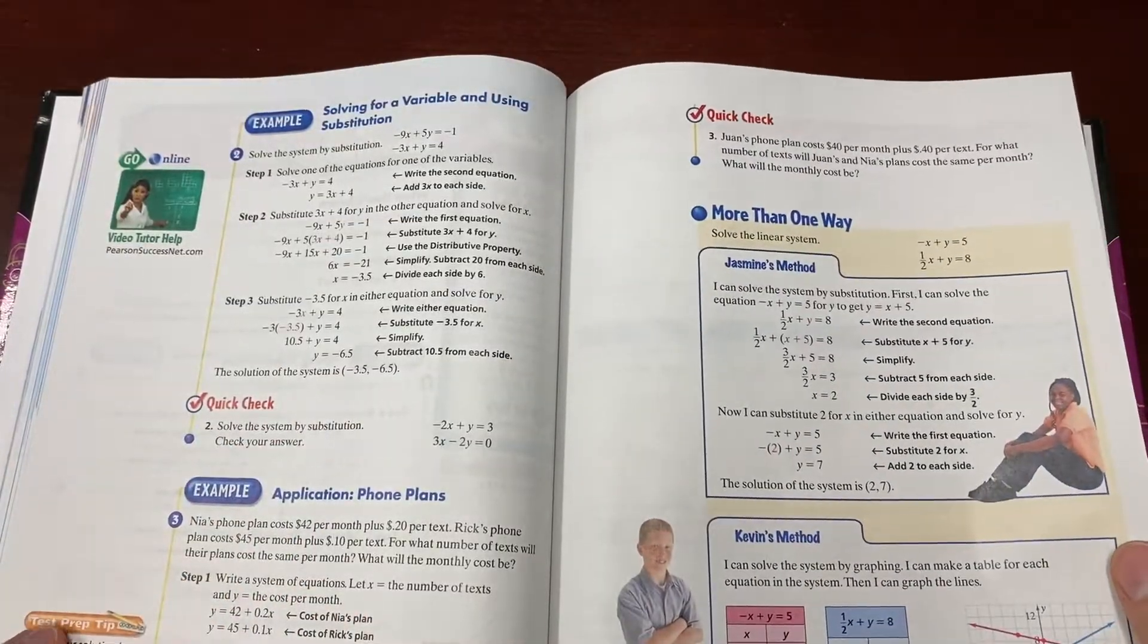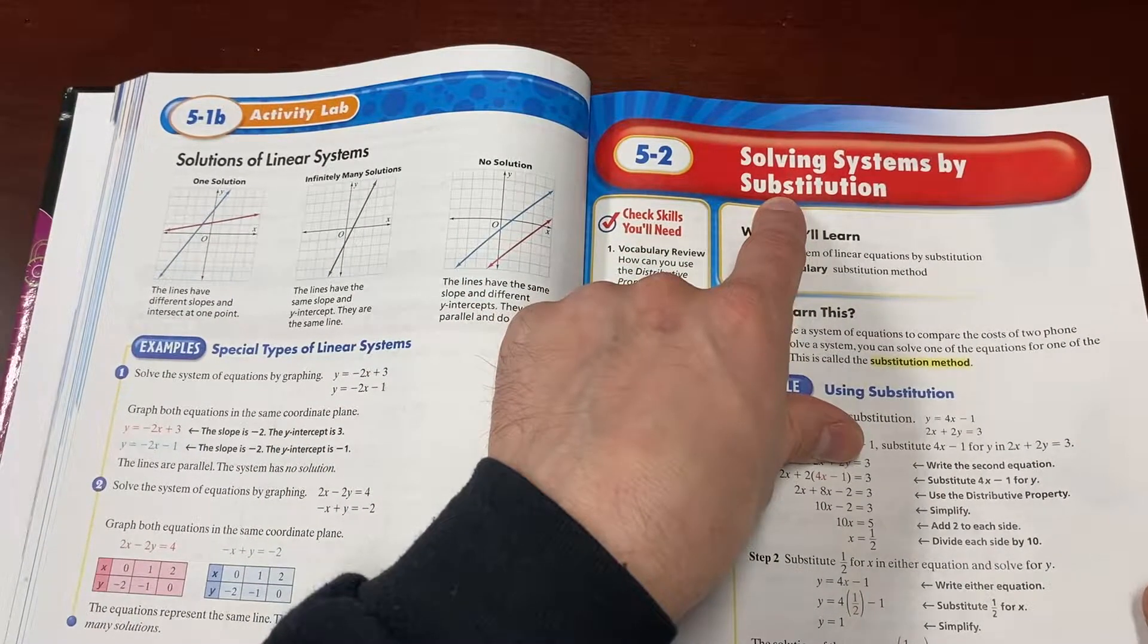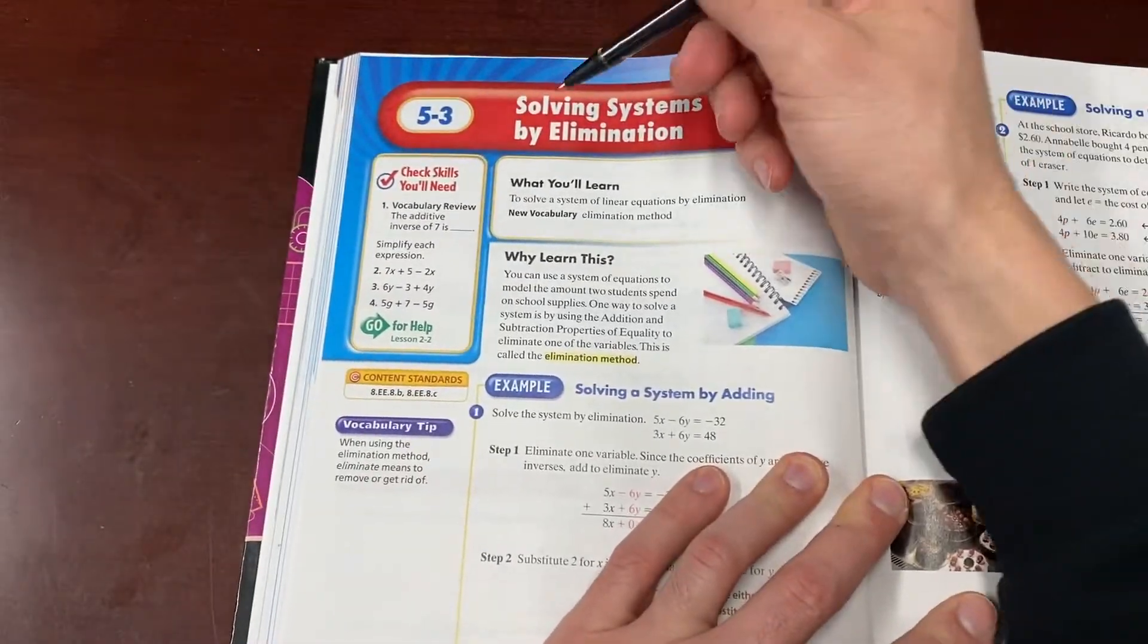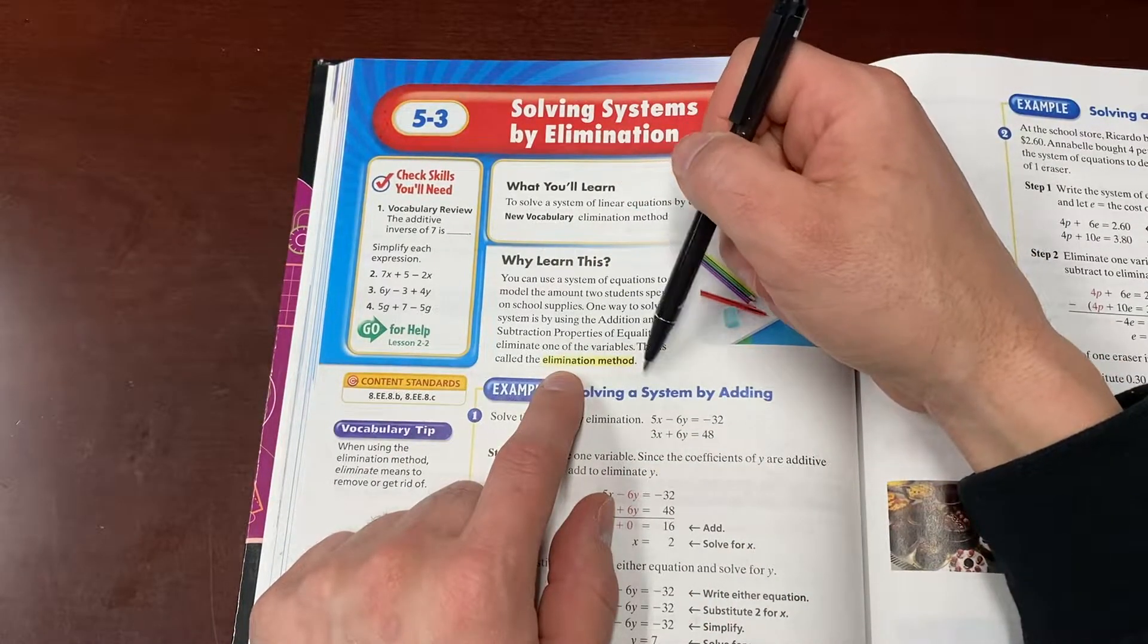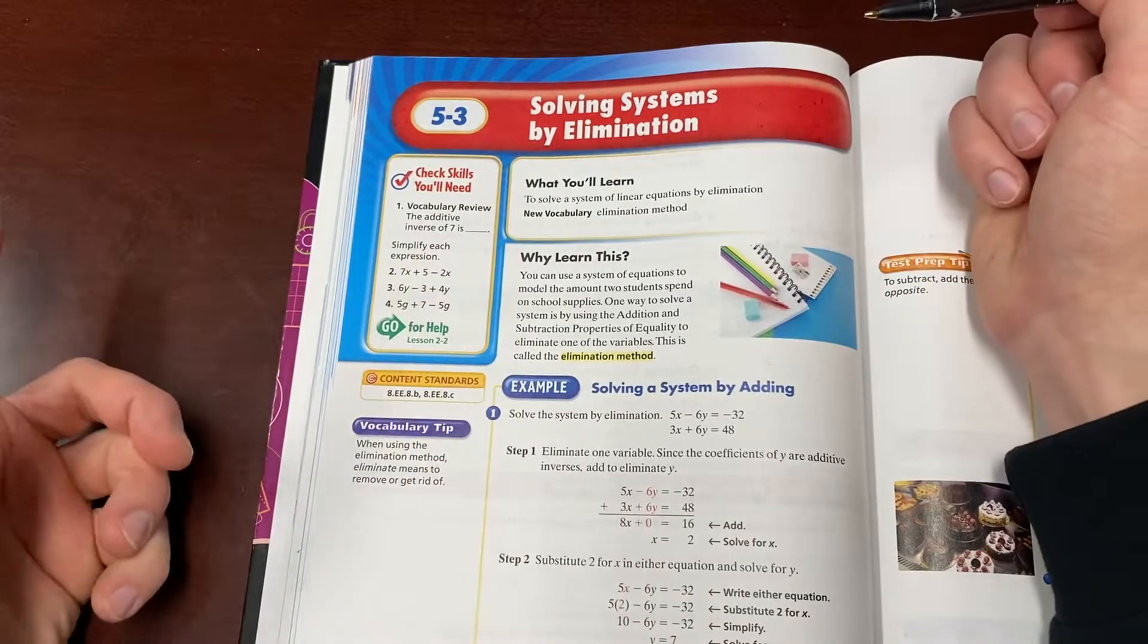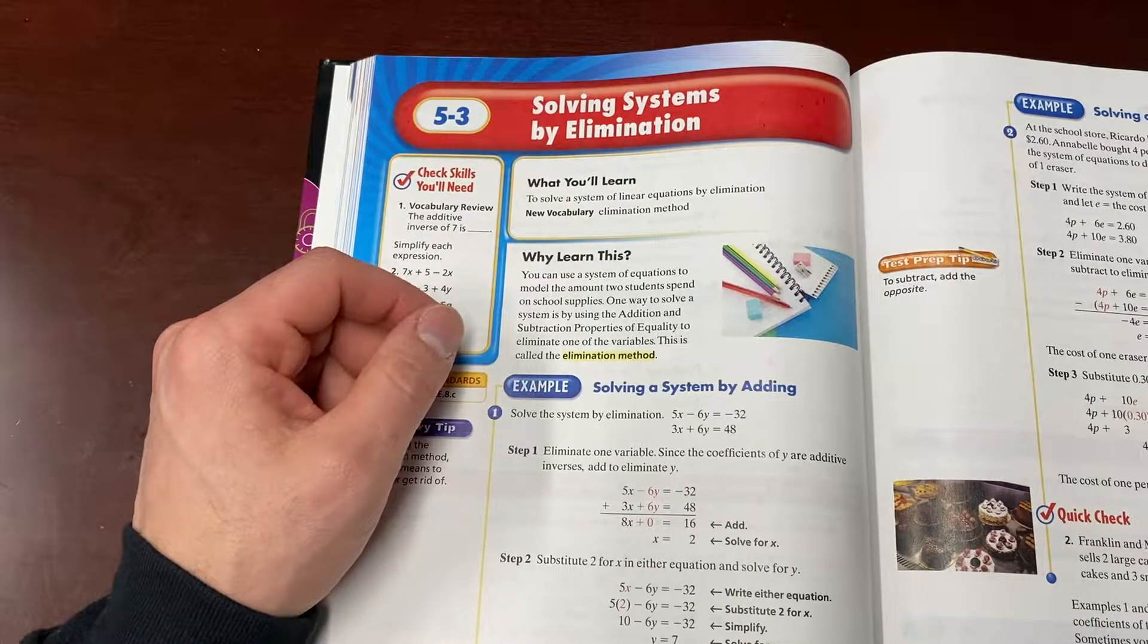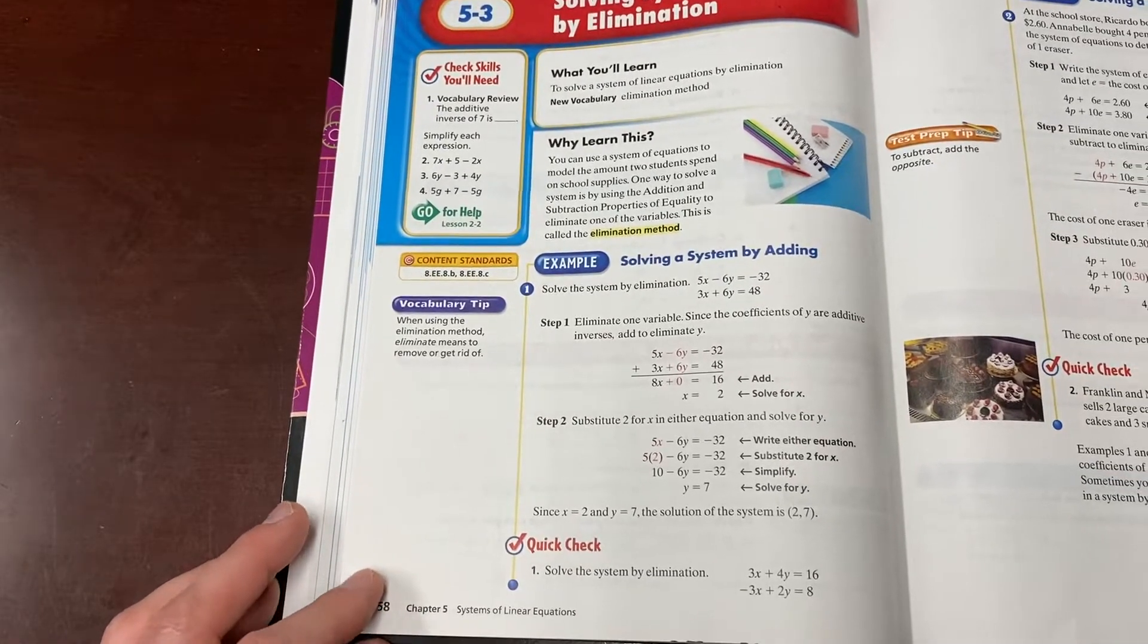Alright, eighth grade. When we left off, we were solving by substitution. What I'm going to do right now is introduce you to solving systems by what's called elimination. Why is it called elimination? Because you are literally going to be eliminating one of the variables from the system. So most students prefer the elimination method to substitution, but you guys are learning it a little bit differently here.